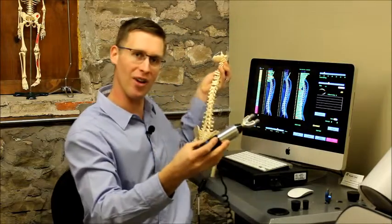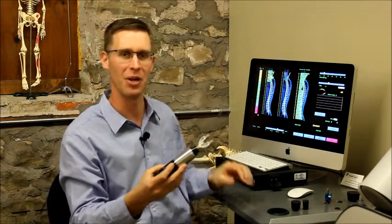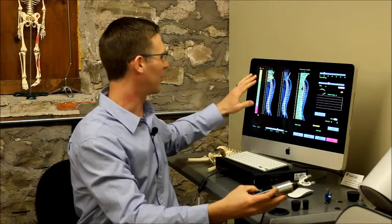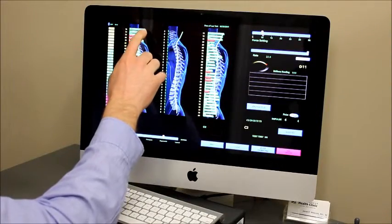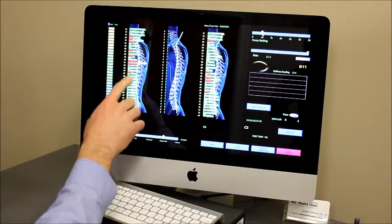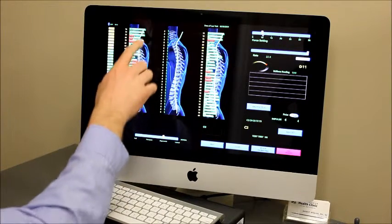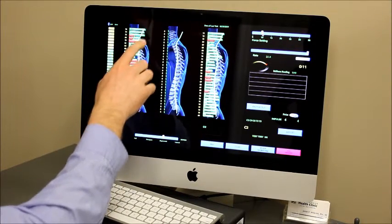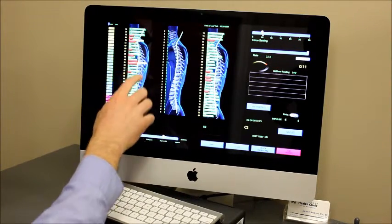The impulse head also measures the movement at each level of the spine and records it as a bar graph on the computer screen. The different colors on the bar graph indicate different things. The green bars indicate areas of your spine that are moving well.